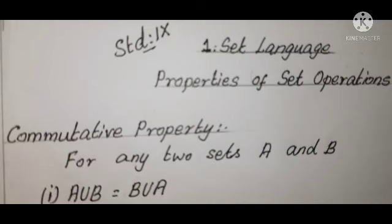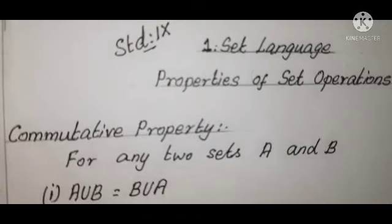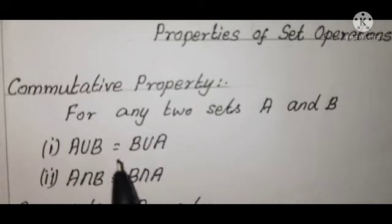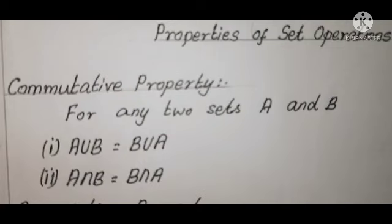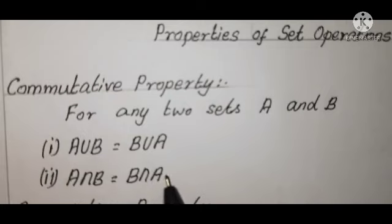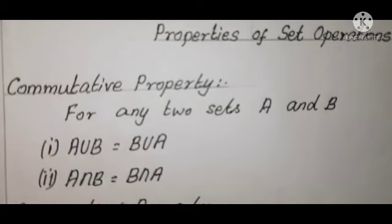First property: commutative property. For any two sets A and B, A union B equals B union A. This is called the commutative property of union of sets. Second: A intersection B equals B intersection A. This is called the commutative property of intersection of sets.